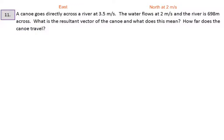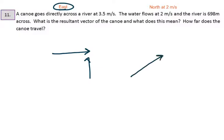The next type of problem we see with vectors is commonly referred to as river boat problems. We're going to talk about a canoe heading directly across a river in the east direction at 3.5 meters per second. The water is flowing north at 2 meters per second. If you visualize this, the canoe is going east and the water is flowing north, so the canoe is going to end up going in a northeast direction.